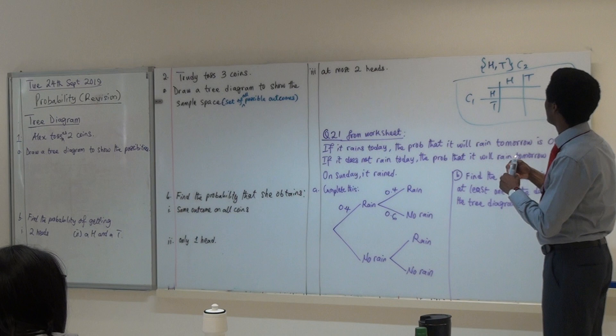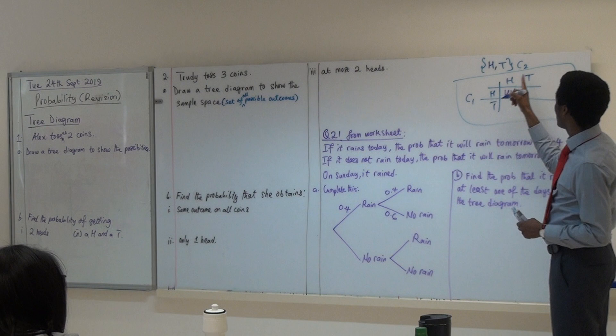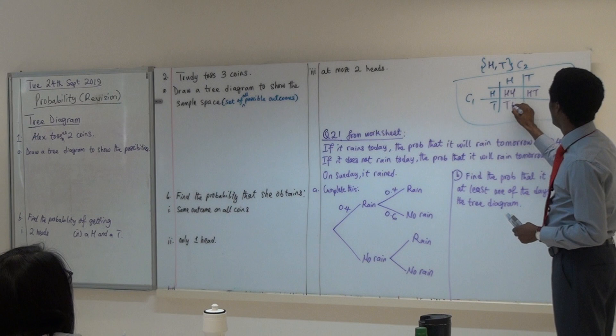Now, if coin number one is head, and coin number two is head, then I have head, head. Okay? If coin number one is head, and coin number two is tail, then I have head, tail. Similarly, tail, head, and tail, tail.